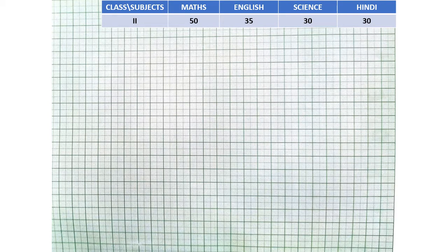In the first question, we have to draw a pictograph and a bar graph representing the most popular subject of class 2. As you can see here, the data for class 2 is given to us. There are 50 students in Maths, 35 in English, 30 in Science and 30 in Hindi.